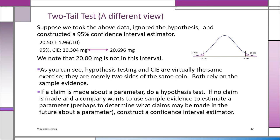If a claim is made about a parameter, you do a hypothesis test to test that claim. If no claim is made and you just want to use sample evidence to estimate a parameter, you construct a confidence interval. In both cases, you're relying on the sample evidence. If we ask you to construct a confidence interval, there's no claim — you're constructing an interval that you're 90, 95, or 99 percent sure contains the parameter. Once you hear a claim about a parameter, you take sample evidence to test whether the claim is reasonable.